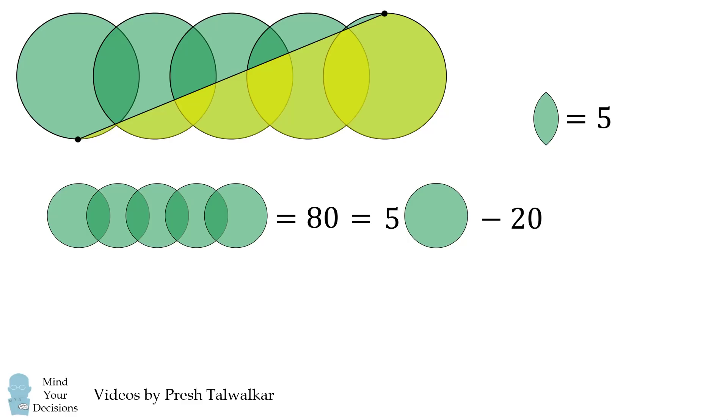We then can methodically solve this equation for the area of a single circle. 5 times the area of a single circle will be equal to 100, so the area of a single circle will be equal to 20. And that's our answer!